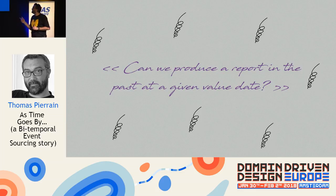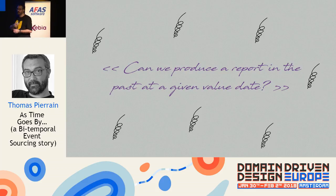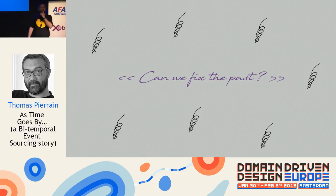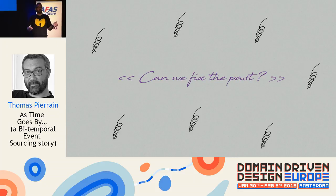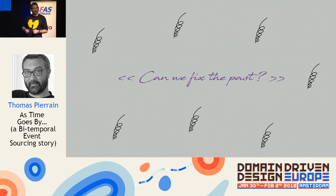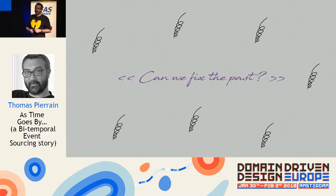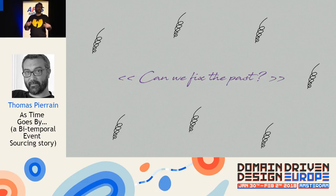First question: can we produce a report in the past at a given value date? I said of course — with event sourcing you can get back in the past. They said no, no — can we fix the past? I was looking at Bruno thinking: is this a trap? I said, can you please explain what you need about fixing the past? They said, yes, because it's our bread and butter. So I said I'd investigate and get back to them.